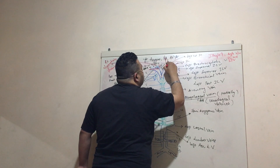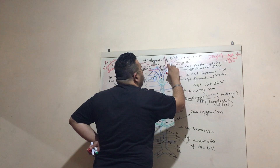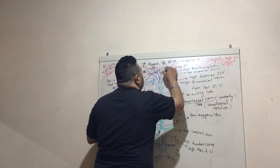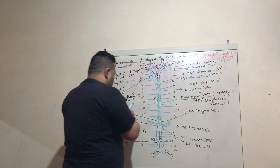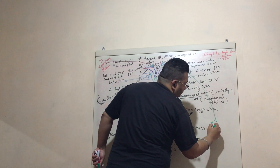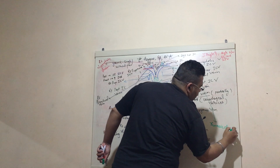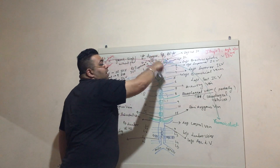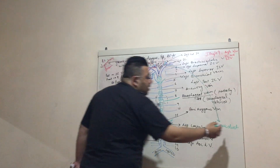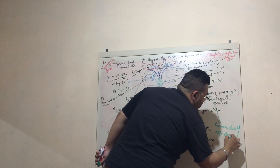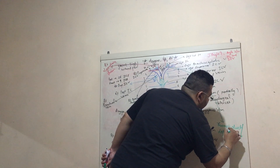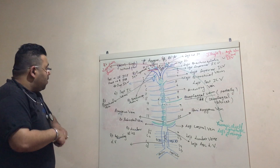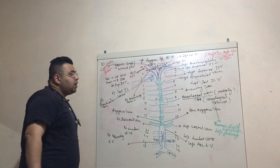On the left side, at the angle between the left subclavian and left internal jugular vein, we have the thoracic duct, which carries lymphatics from the left side of the body and drains into the venous blood at the left jugular angle. This is also known as the left lymphatic drainage.